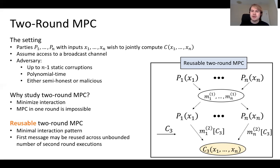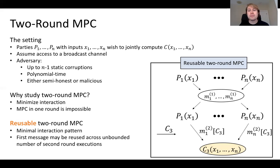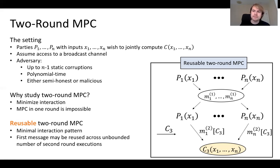They can keep doing this. If they want to compute M different circuits over their inputs, they only require M plus one messages in total, rather than two M messages if they just used regular two-round MPC. So in this way, it's minimizing interaction even further.